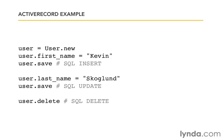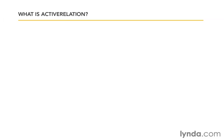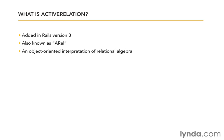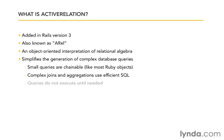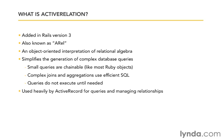That's what I mean by objects that are intelligent. Next, let's talk about what Active Relation is. Active Relation is new — it was added in Rails version 3 and is often referred to as ARel. Active Relation is an object-oriented interpretation of relational algebra. It simplifies the generation of complex database queries, allows us to write small chainable queries, handles complex joins and aggregations using efficient SQL, and manages the timing of when queries run — queries don't execute until we actually need them. Active Relation is used heavily by Active Record and can be thought of as the underpinning that Active Record sits on top of.